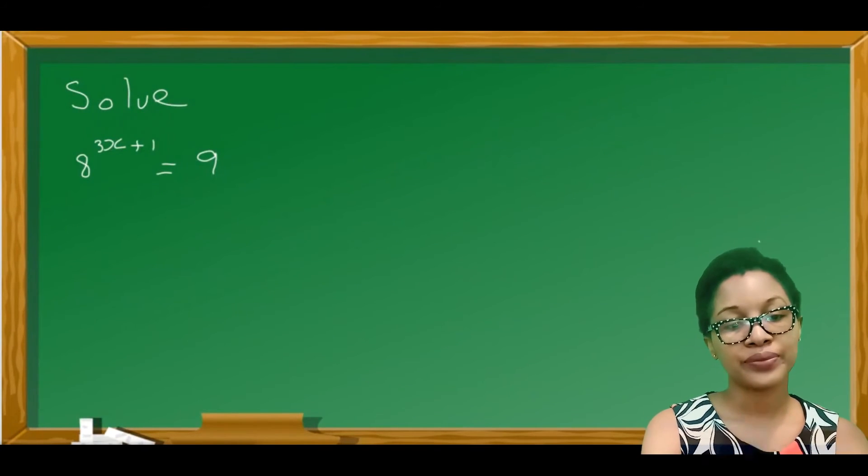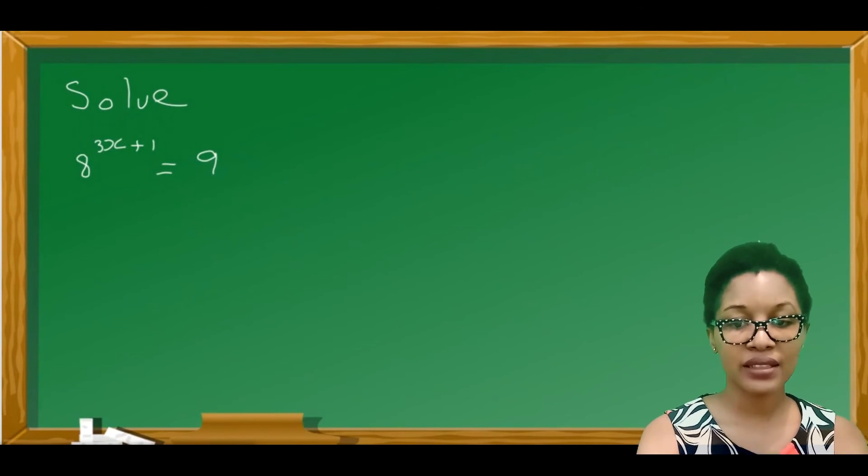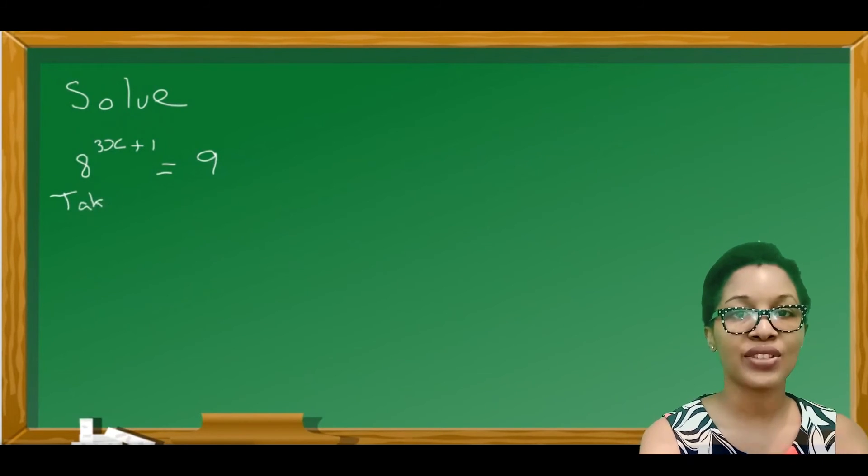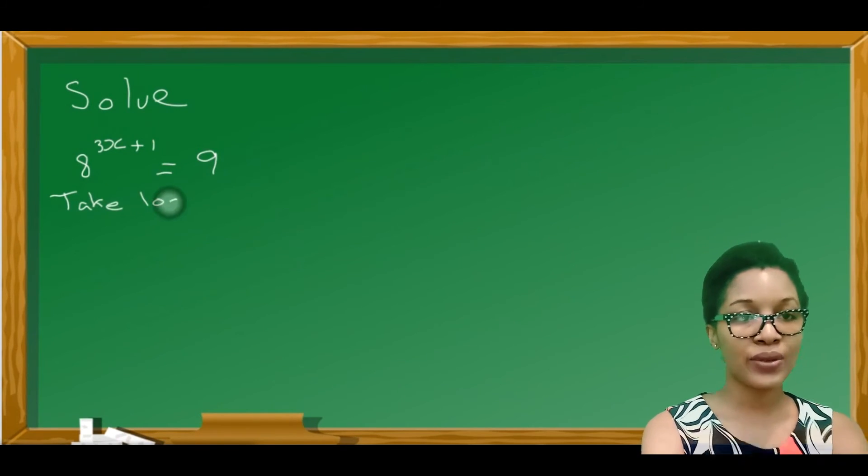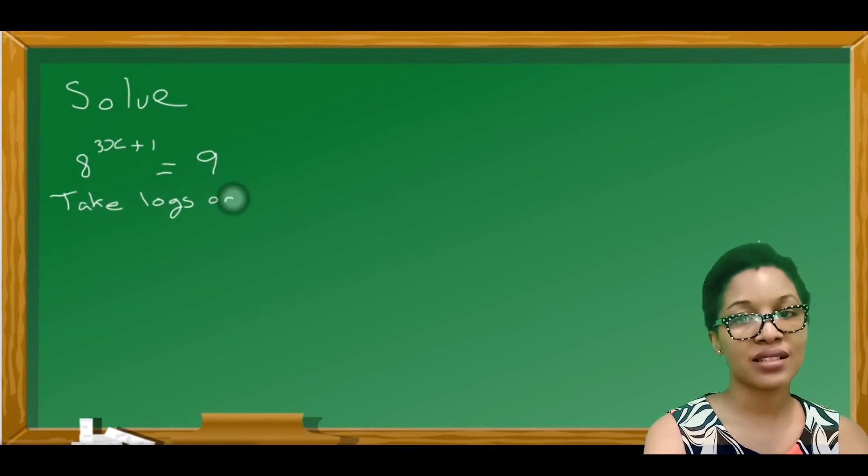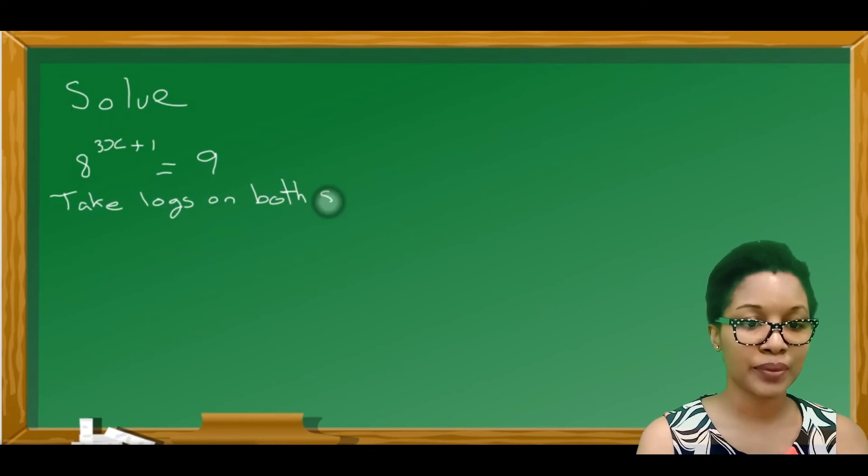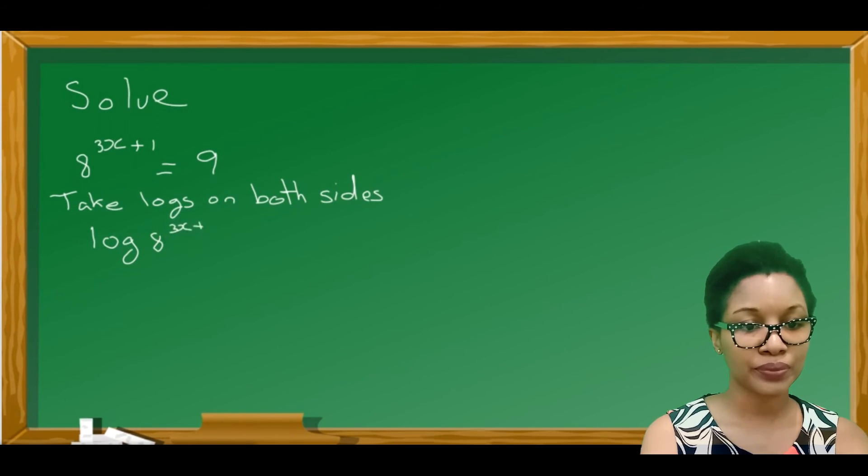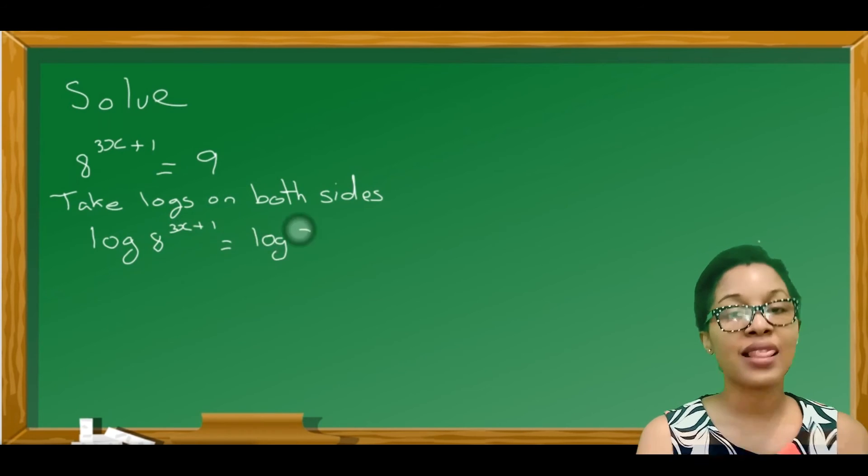Example number 3. 8 to the power 3x plus 1 equal to 9. Now this is an indices question, but we're going to use logs to solve it. Let's take logs on both sides. We'll get log 8 to the power 3x plus 1 is equal to log 9.